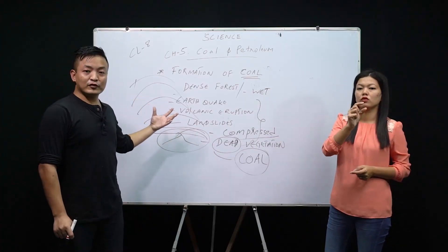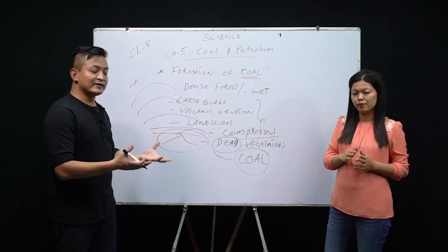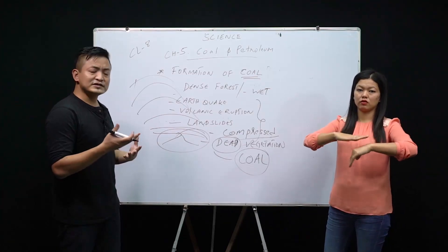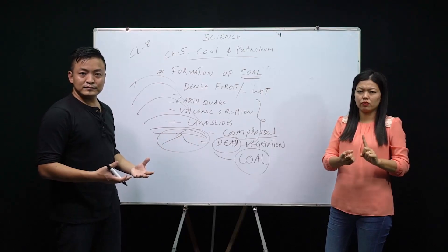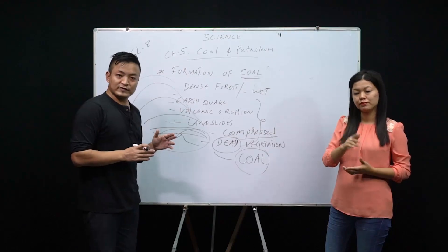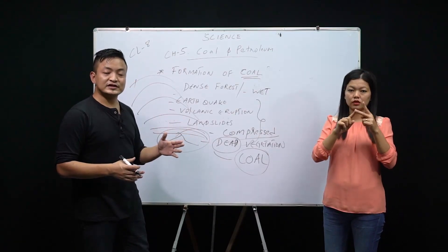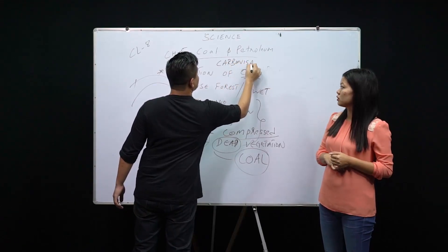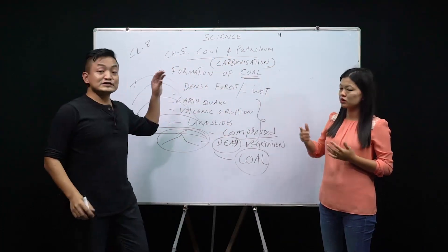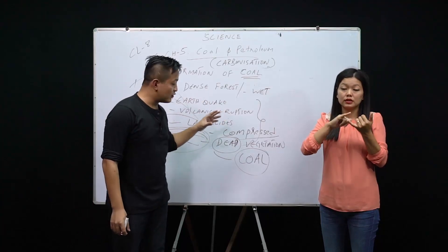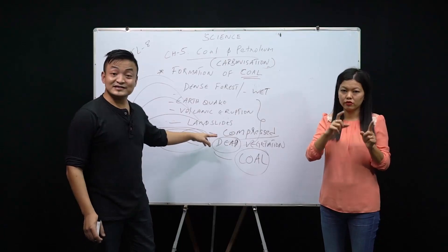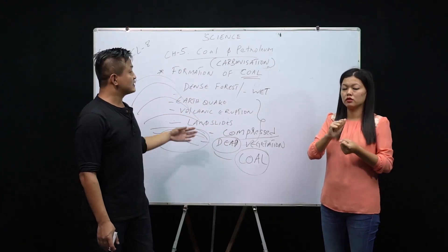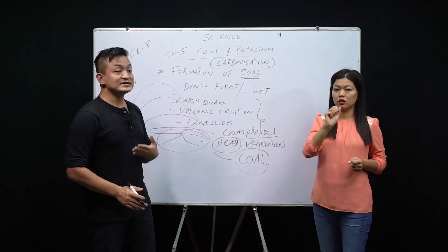To summarize the formation: there was a forest, and due to natural factors it got buried inside the earth, and because of high temperature and pressure over time it converted into coal. This is a slow process. The slow process of conversion of dead vegetation into coal is known as carbonization. Please note this definition — carbonization is important.